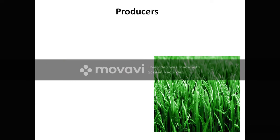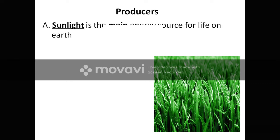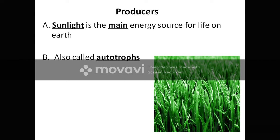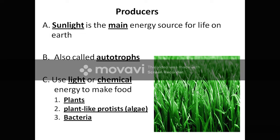Since we are studying ecosystem, we should understand a few important terms. The first important component of ecosystems are producers — organisms who can synthesize their own food material. We call them autotrophs. Sunlight is the main energy source for life on earth. These producers either use light or chemical energy to synthesize their food. Producers include green plants, plant-like protists such as algae, and some bacteria.